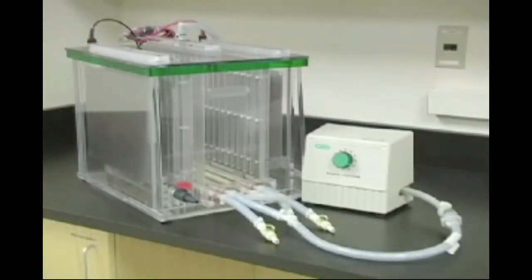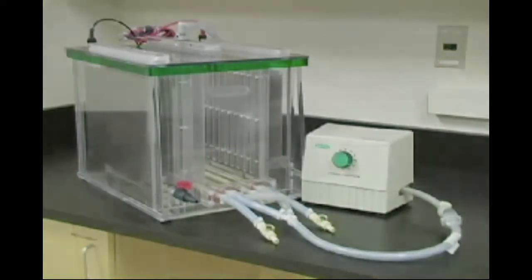Ensure that the cassette is placed in between the gaskets. The cell is now ready to be filled with buffer. Make sure the buffer level is just below the height of the glass plates.